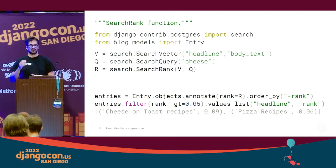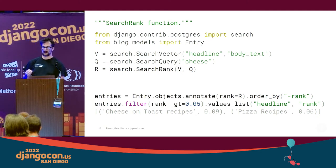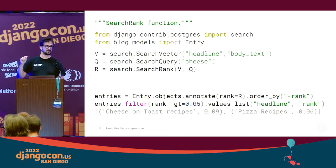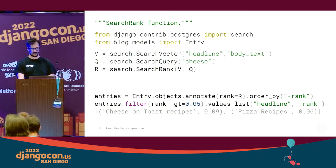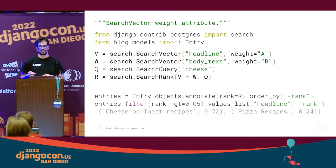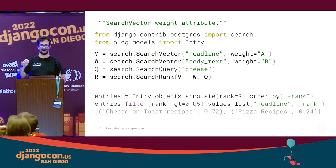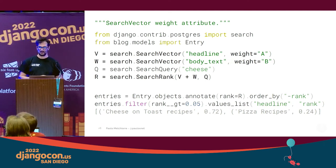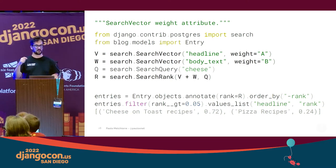If you also want to list relevant results first, we can use the SearchRank function. Based on the query text and the document, Postgres will calculate a rank number. We can use this annotated rank to order the results and also to filter them. We can perform a fine-grained full-text search using the weight attribute of the SearchVector function — for example, we can decide that words in the entry headline are more relevant than words in the body text, and we'll see a new rank number in our results.